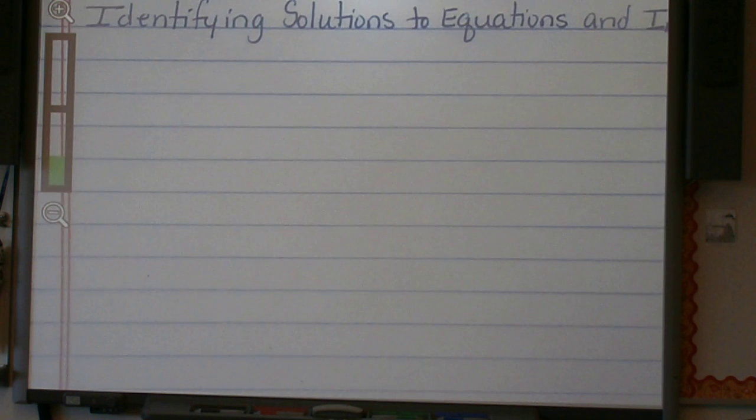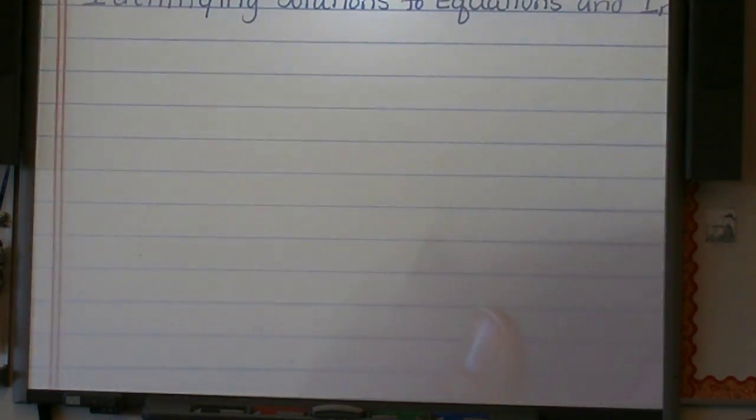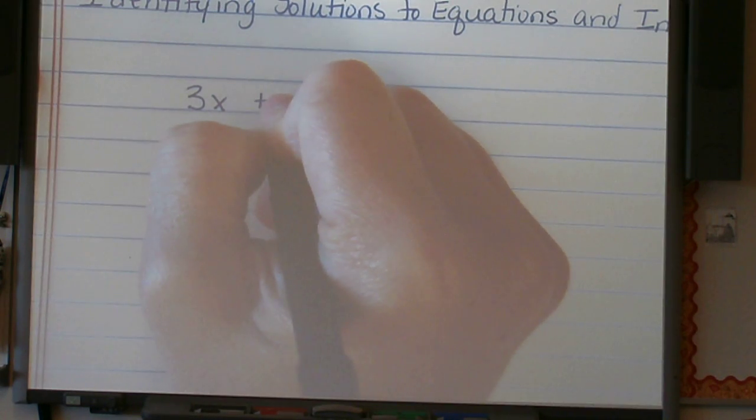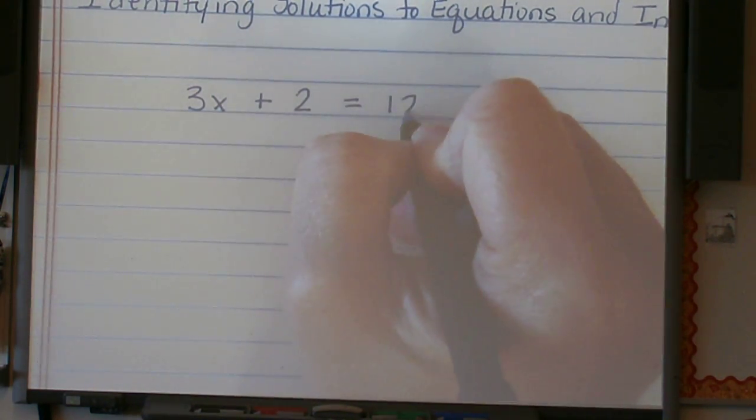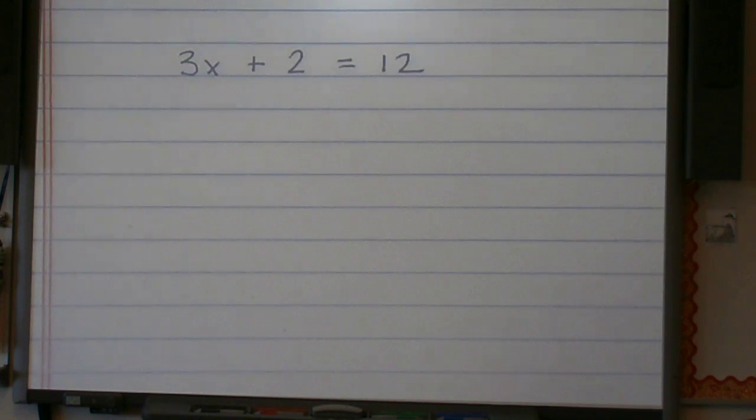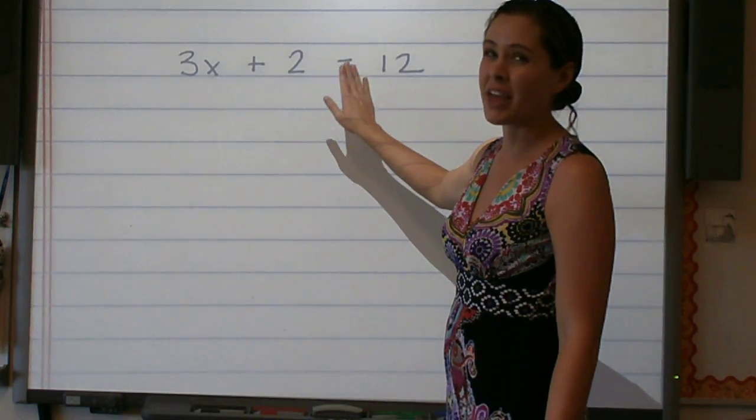With our identifying solutions to inequalities and equations, we're going to use that same process of plugging in the value given for the variable and simplifying each expression on either the left or right-hand side of the equation or inequality. So 3x plus 2 equals 12. We now have an equation. We know we have an equation because we have an equal sign.